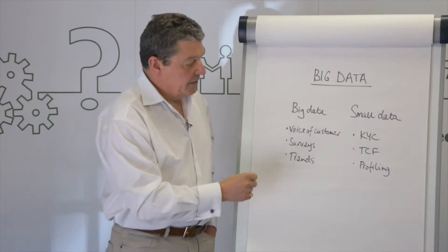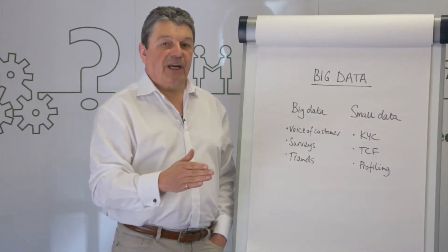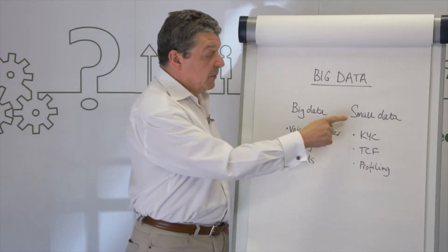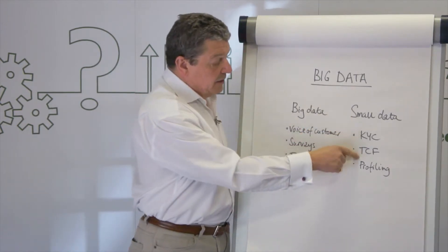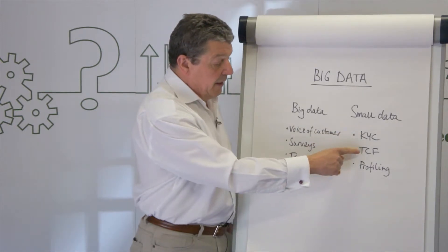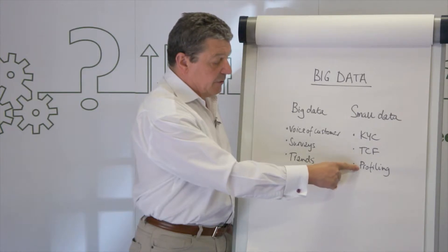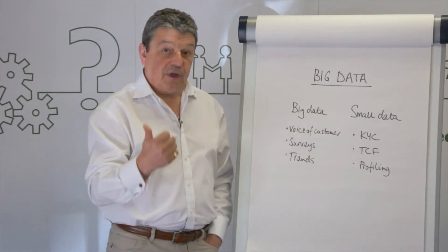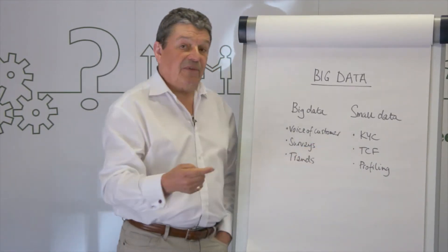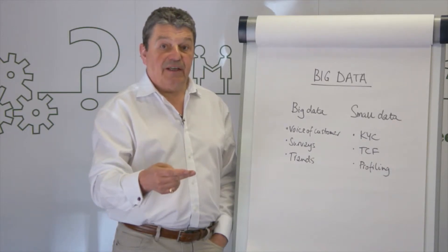If on the other hand you look at the financial services industry, which is so heavily regulated, they have to do things at an individual level and deal with small data. The two buzz phrases that kick around financial services are 'know your customer' and 'treat customers fairly.' In other words, you need profiling in your systems to ensure you're compliant, dealing with all the privacy issues, and treating customers fairly at a level of understanding that they will have.